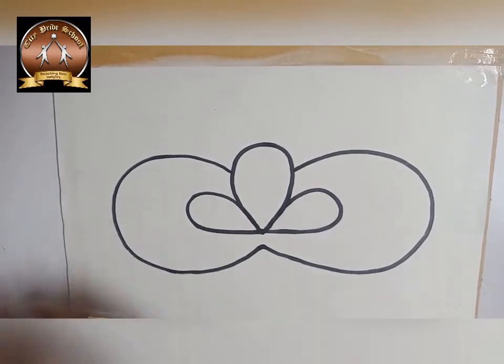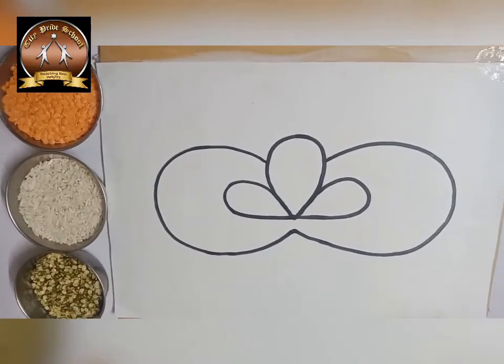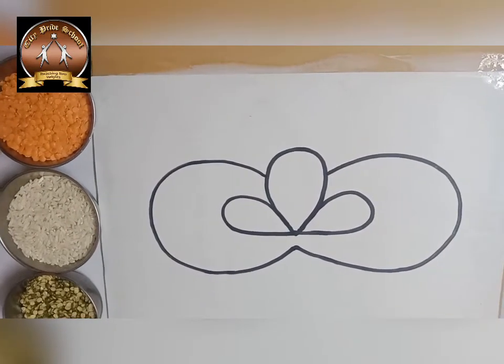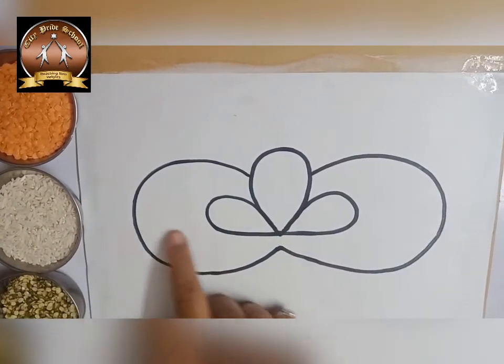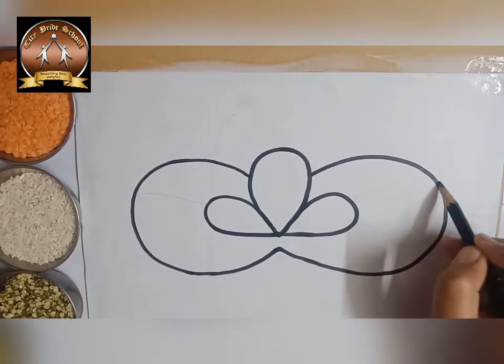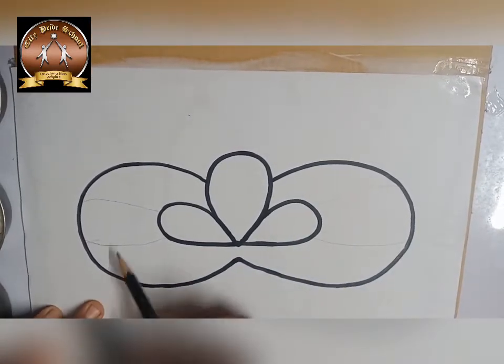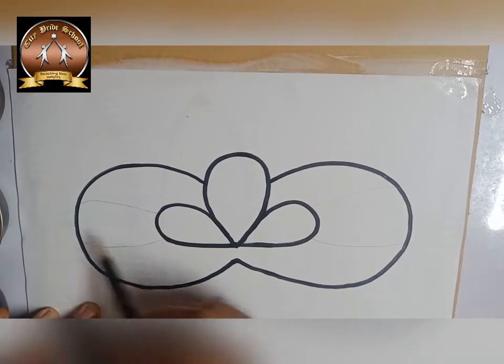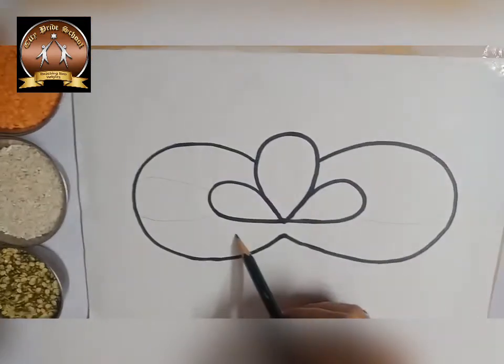Now children, why are we using this tricolor? Because this week we are going to celebrate Independence Week. In our flag, there are three colors: orange, white, and green. We are using these three colors to decorate our mask. First we have to divide our mask into three parts by using curve lines. In this first part, I will use orange dal. In the middle part, I will use white rice. In the down side portion, I will use green dal.